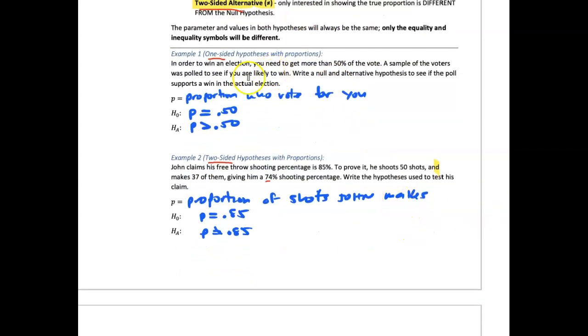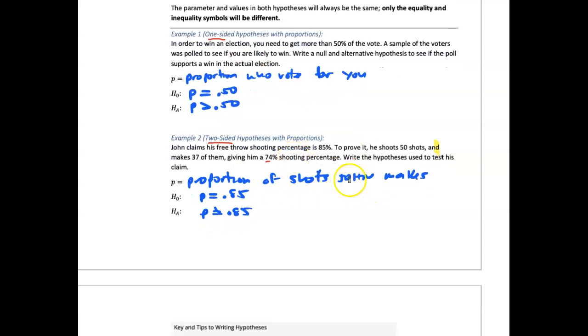So that would have been a one-sided test. A two-sided test would be someone believes they shoot 85% as a basketball situation. To prove it, he shoots 50 and makes 37 of them and gives them a sample data of 74%. The hypothesis he used to test this.